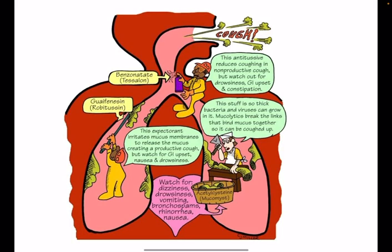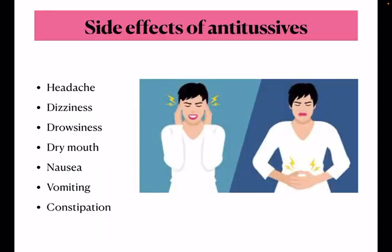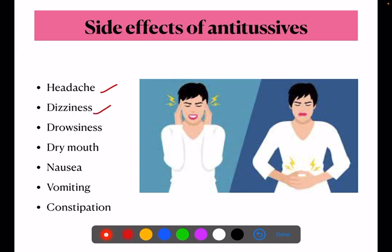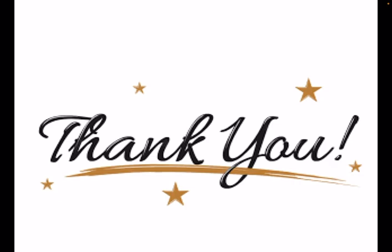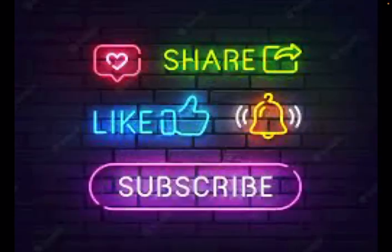Here we have an animated photo where you can see the side effects and how antitussives work. Side effects of antitussives are mainly headache, dizziness, drowsiness, dry mouth, nausea, vomiting, and constipation. I hope this is clear. If you want videos on any other topic, please write in the comment section. If you like the video, please like, share, and subscribe to the channel. Thank you so much.